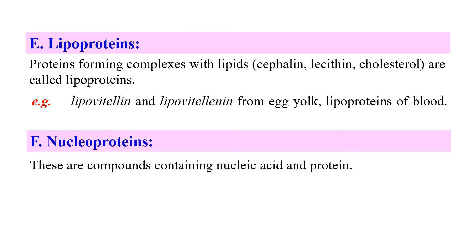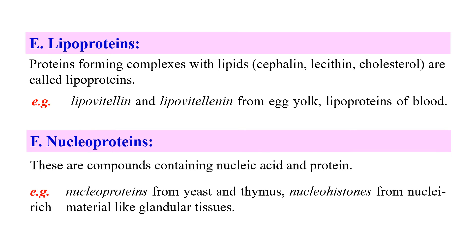Nucleoproteins — here the prosthetic group is nucleic acid, meaning these are complexes of protein and nucleic acid. They are generally present in nuclear substance as well as in the cytoplasm. Examples include nucleoproteins from yeast and nucleohistones from nuclear-rich material like glandular tissue.